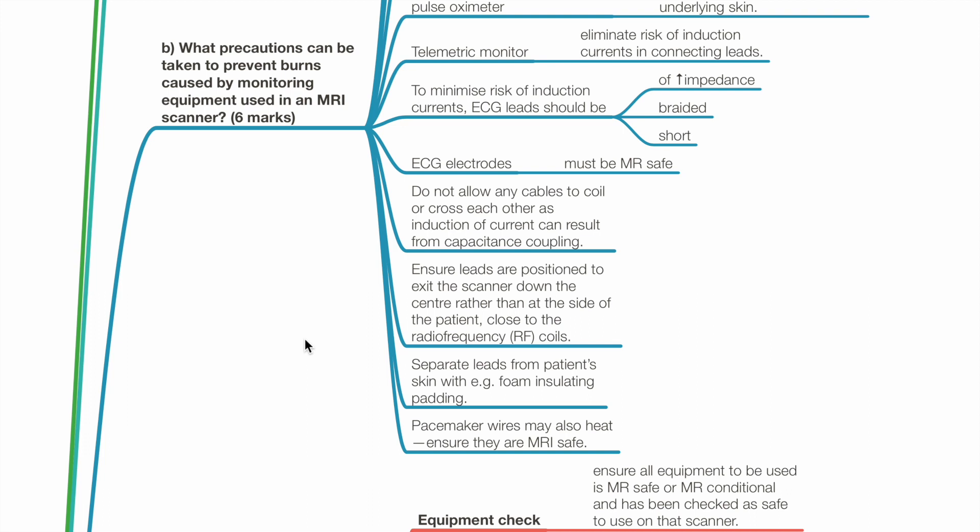Ensure leads are positioned to exit the scanner down the centre rather than at the side of the patient, close to the radio frequency coils. Separate leads from the patient's skin, for example with foam insulating padding. Pacemaker wires may also heat — ensure that they are MRI safe.